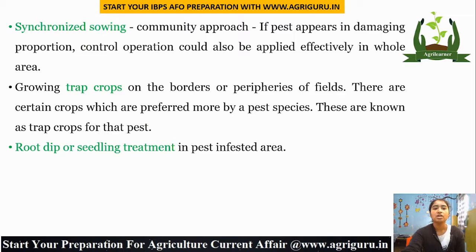Synchronized sowing is a community approach where farmers should sow at the same time, so that if pests appear in damaging proportions, control operations can be applied effectively across the whole area. Growing trap crops on the borders or peripheries of fields — certain crops preferred more by a pest species are known as trap crops of that pest.